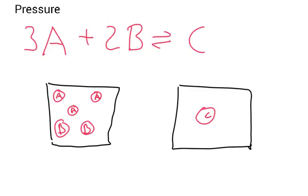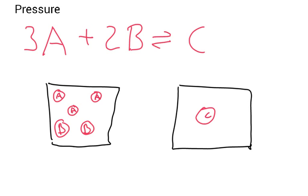Now let's talk about pressure. I've drawn a box and invented a chemical equation: 3A + 2B goes to C, and it's a reversible reaction. Looking at the left side, I've got three A and two B — so five different molecules — whereas C on the right is just by itself, one molecule.